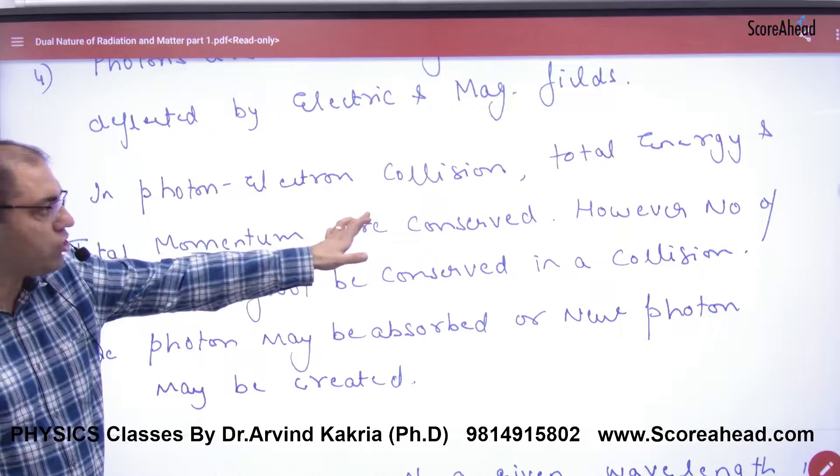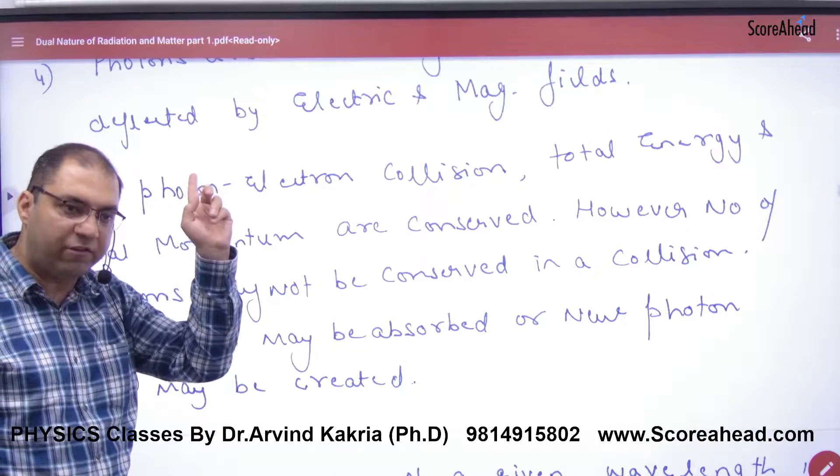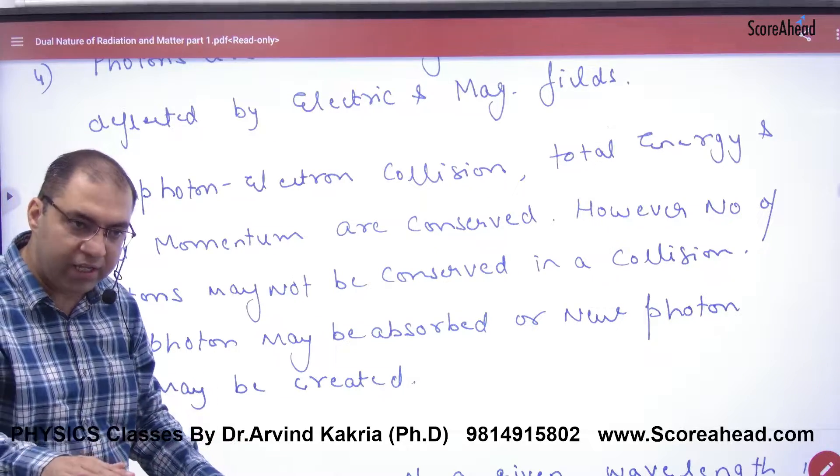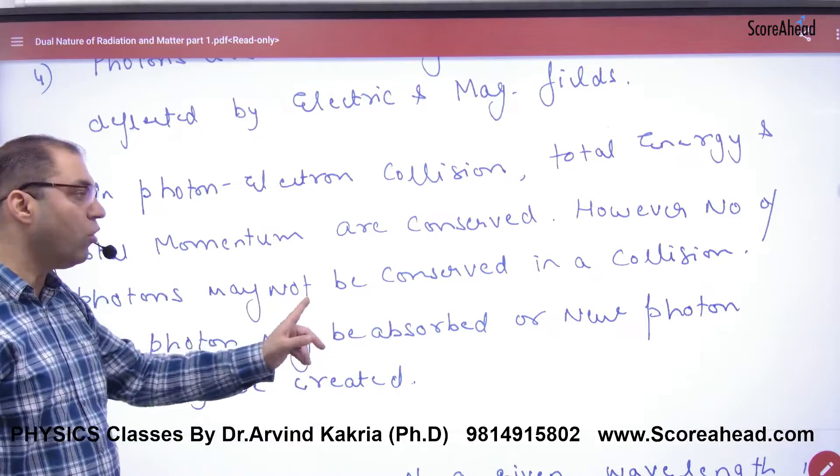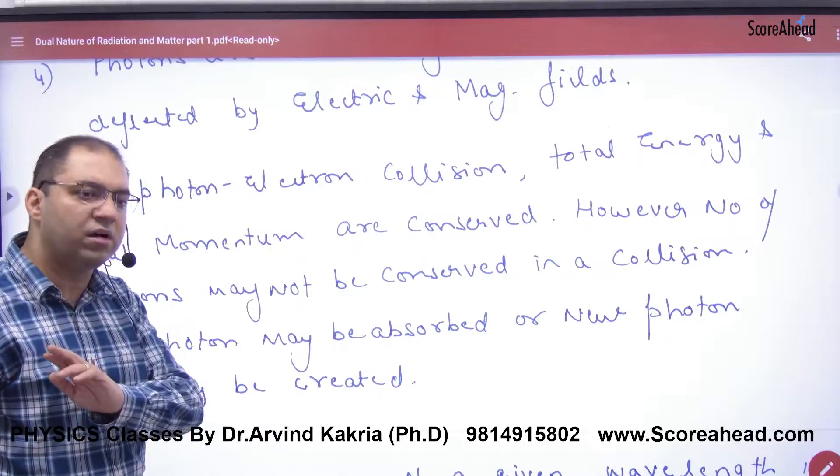In photon-electron collision, total energy and total momentum are conserved. We had collisions in plus one. In collisions, total momentum and total energy are conserved. But number of photons may not be conserved. Some photons may be absorbed or new photons may be created.